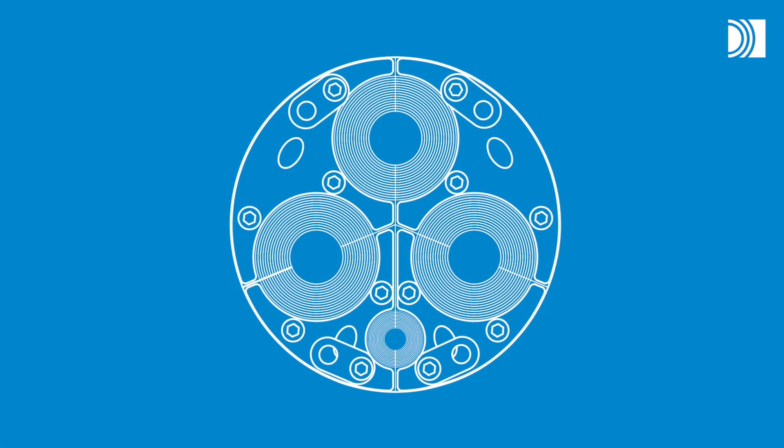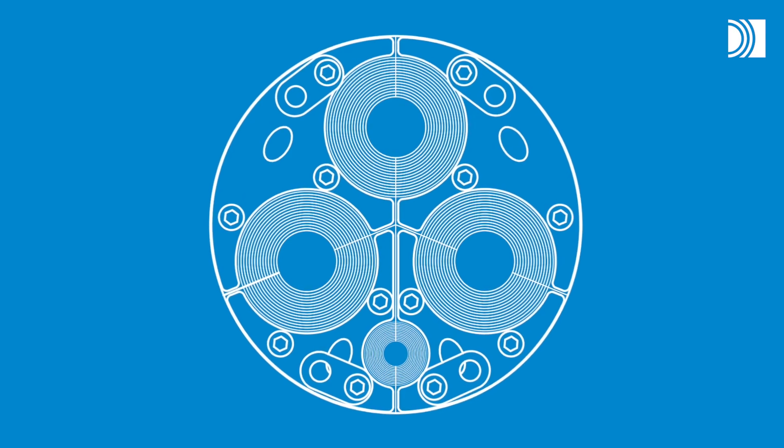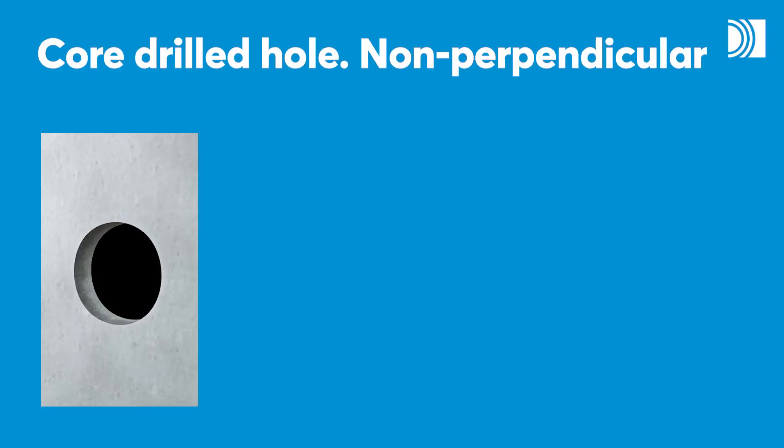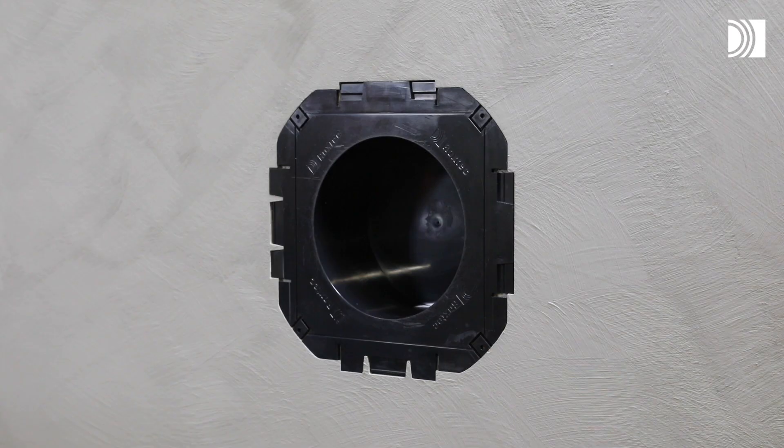With a Roxtec HUG Seal, you can seal openings for cables and pipes in different structures. You can install it in a core-drilled hole, a non-perpendicular hole, or a bolted, welded, or cast-in sleeve, such as a Roxtec knockout sleeve.